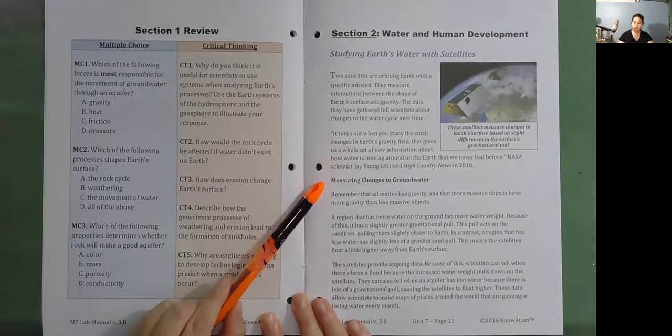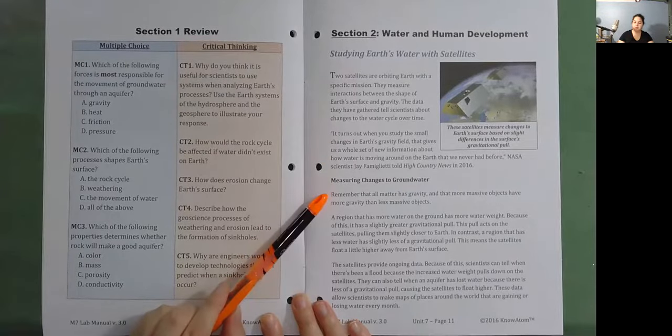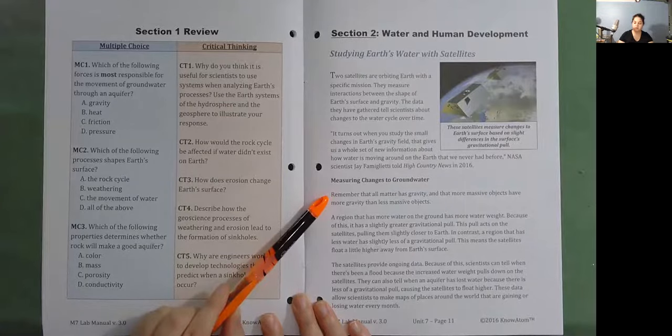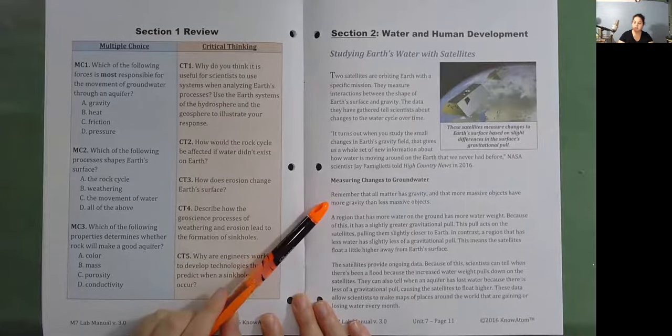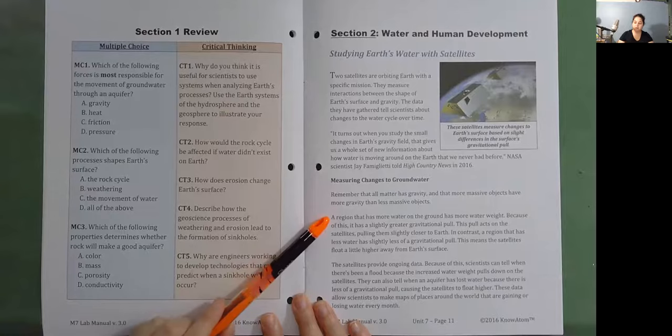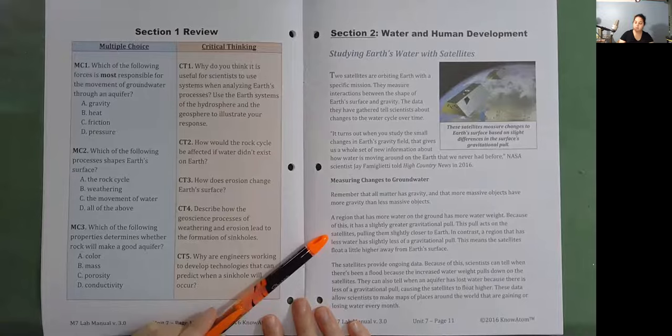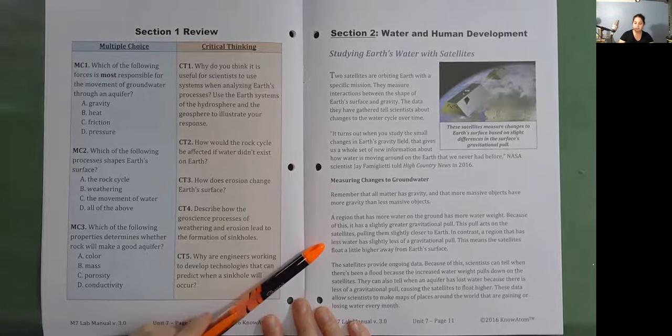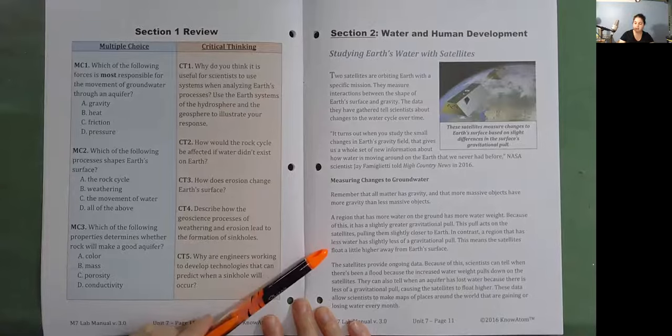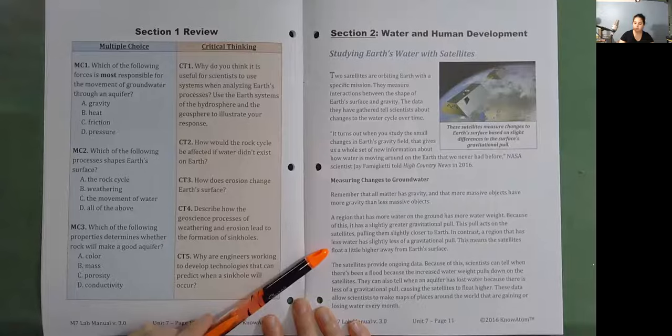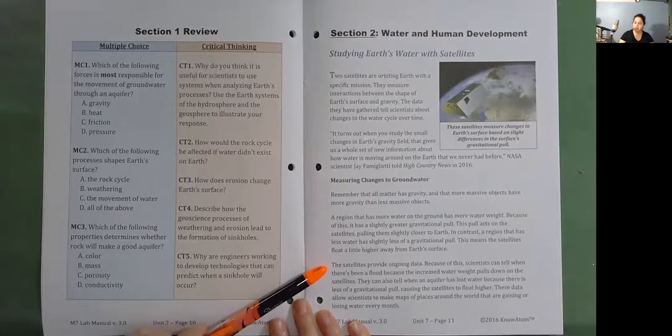Measuring changes to groundwater. Remember that all matter has gravity and that more massive objects have more gravity than less massive objects. A region that has more water on the ground has more water weight. Because of this, it has a slightly greater gravitational pull. This pull acts on the satellites, pulling them slightly closer to Earth. In contrast, a region that has less water has slightly less of a gravitational pull. This means the satellites float a little higher away from Earth's surface.